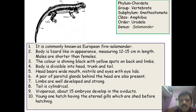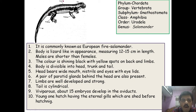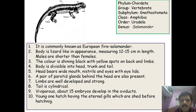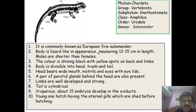The third example from Amphibia is from Order Urodela. 'Uro' means tail — those amphibians having a long tail are included under Urodela. All types of salamanders are included under this order. Salamandra is commonly known as the European fire salamander. The body is lizard-like in appearance, measuring 12 to 15 cm in length, with males shorter than females.